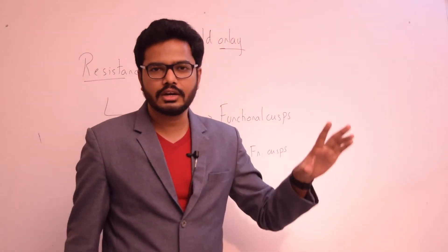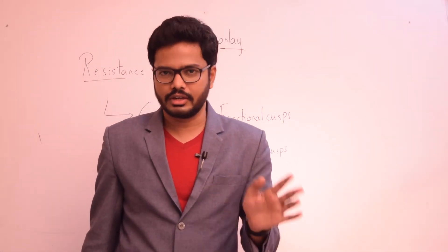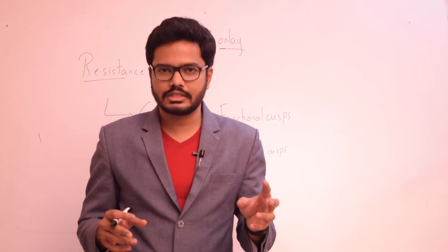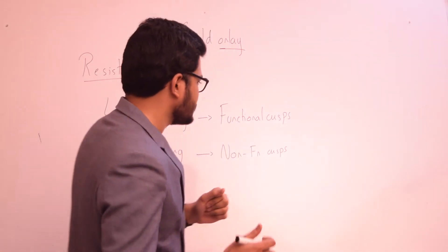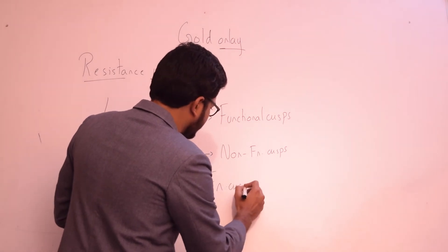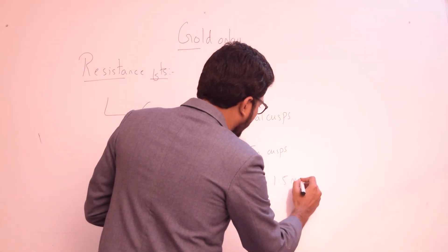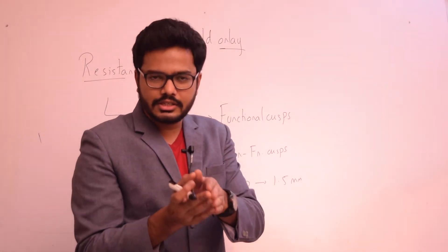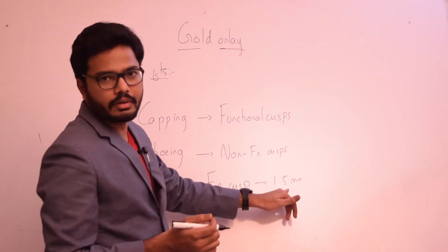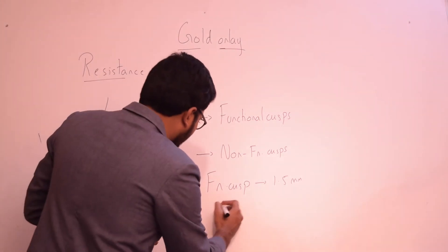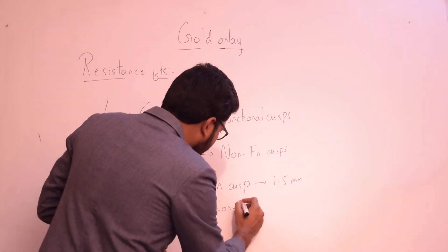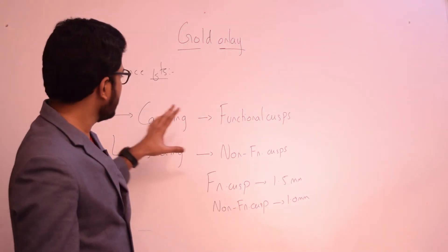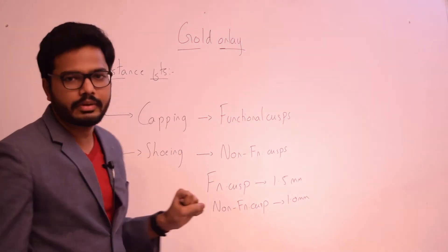Capping is mostly done on functional cusps, whereas showing is done on non-functional cusps. When completing an onlay preparation, the amount of cast restorative material covering the functional cusps should be a minimum of 1.5 mm, especially in the case of a gold onlay. The amount of material covering the non-functional cusps should be approximately 1 mm.